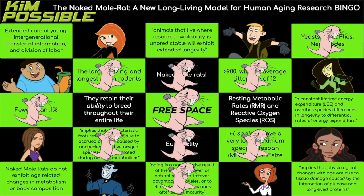What is the advanced glycation end product theory? This implies that physiological changes with age are due to tissue damage caused by the interaction of glucose and long-lived proteins. When you think about it in humans, tissue damage like liver spots and age spots that you see on older people are signs of aging that are also forms of tissue damage.